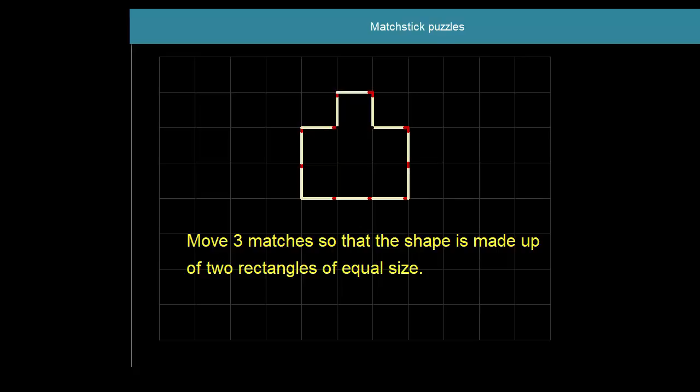Let's see what the solution is. There's the first match straight down. Second one splitting the whole thing down the middle. And there's the third one falling into its place. And there we have it. Two rectangles of equal size. Right. Let's move on.